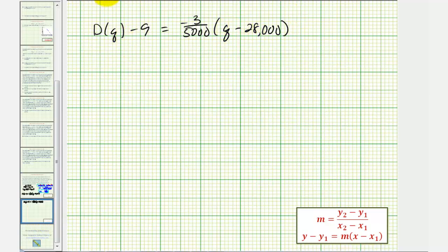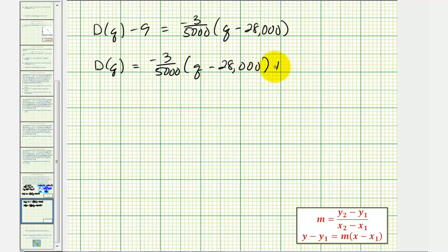Let's begin by adding 9 to both sides. That would give us D(q) equals negative 3 divided by 5,000 times the quantity (q minus 28,000) plus 9.